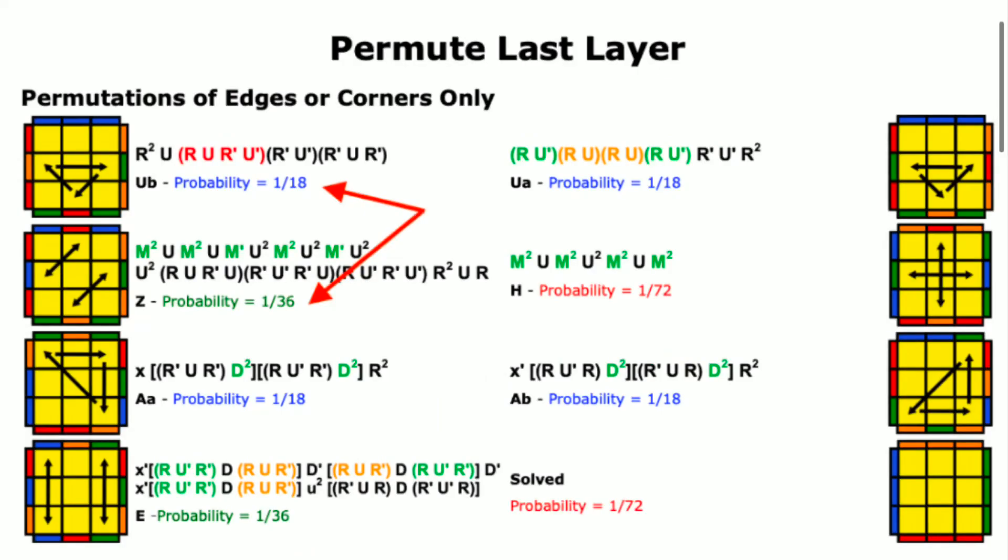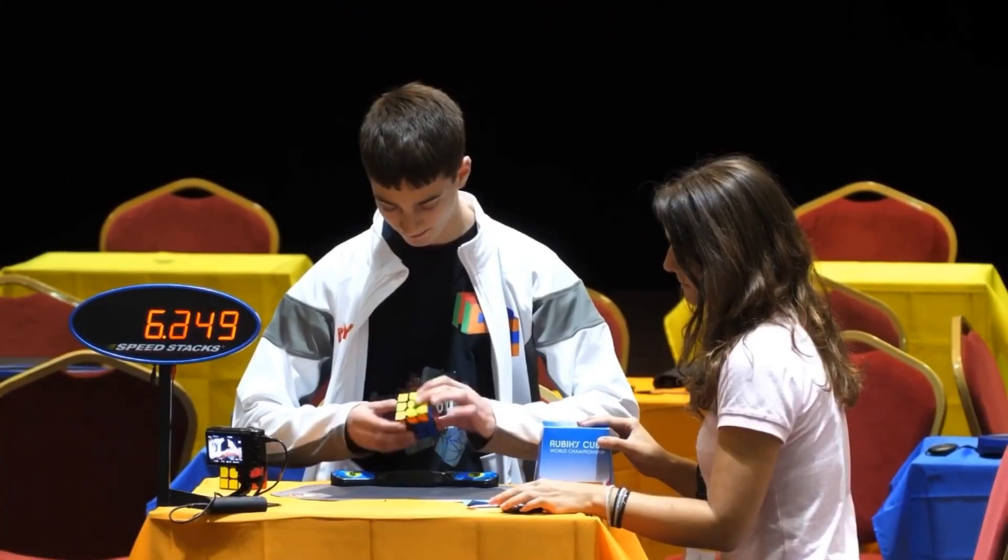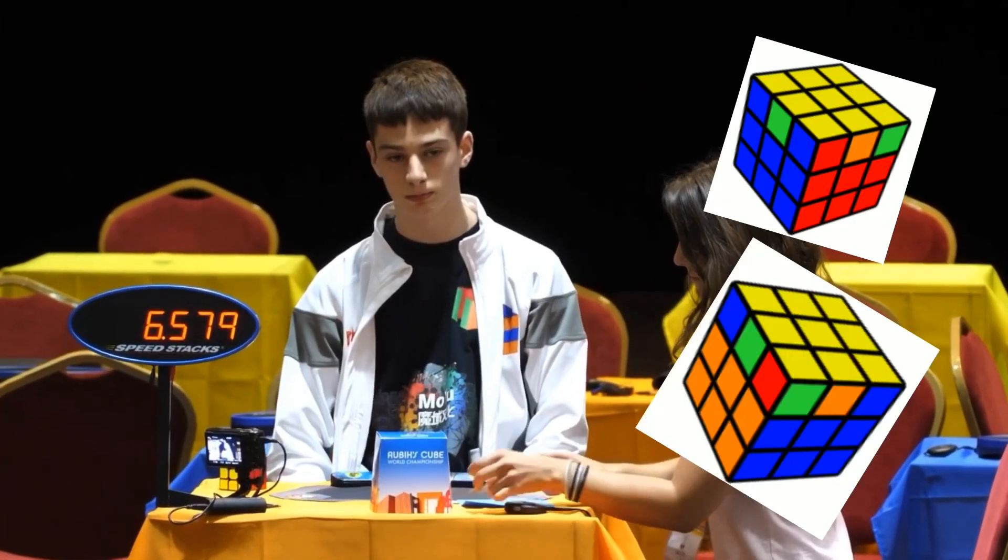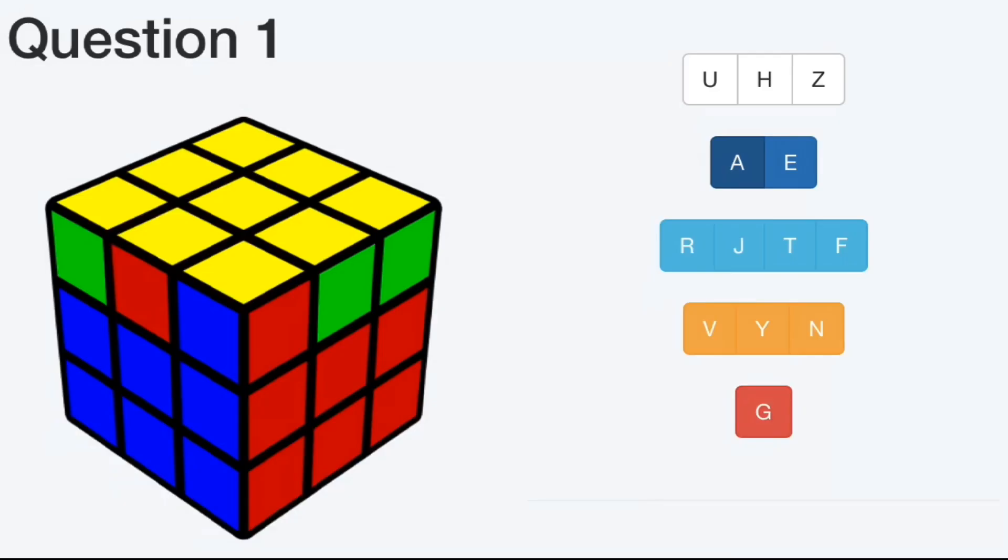PLL cases are one of the hardest things to recognize in a solve, just because they have four different positions on the cube. So in this video, I'm going to be showing you guys how to recognize the hardest cases from each angle, and I will also shout out an amazing PLL trainer so that you can test yourself in practice.